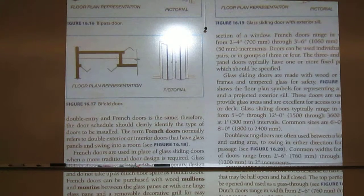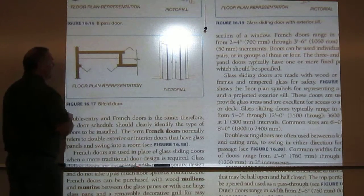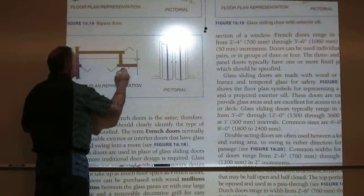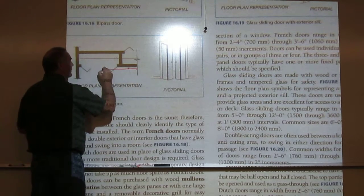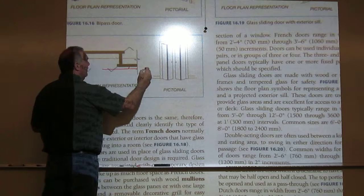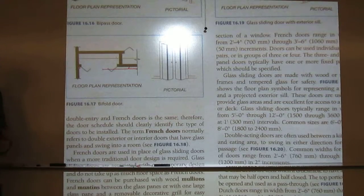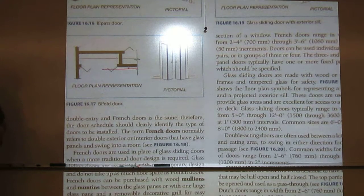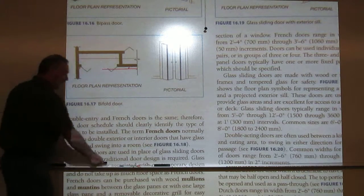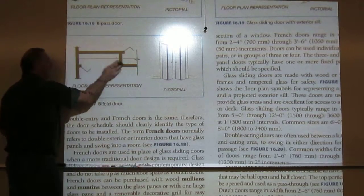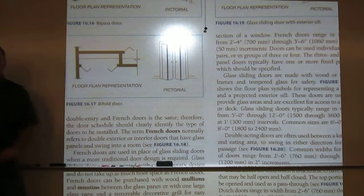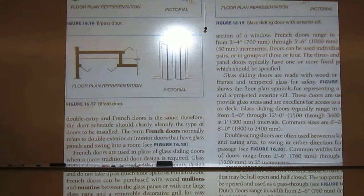Barn doors are a fairly recent thing for interiors. If you're doing a barn door, it's a slider. I would draw it in the half-open position — it goes outside with a rail at the top — something like that showing it open. They don't have an example in the textbook, but it is a specialty door. I'd look it up on the internet, develop a symbol for it, and use that same symbol throughout my drawing set, then go to the schedule for the sizes.